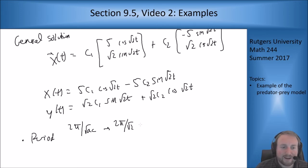The predator is going to lag behind. We would see that once we convert these into a single sine or cosine function based on choosing c1 and c2.